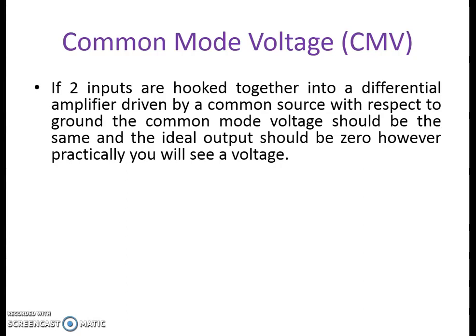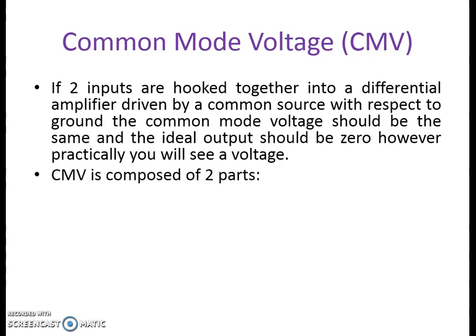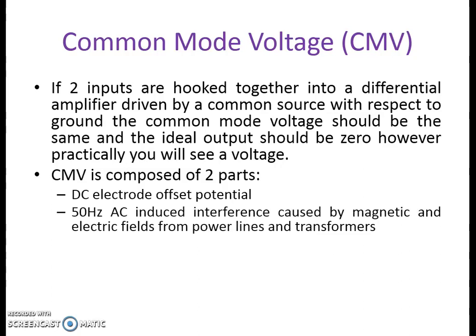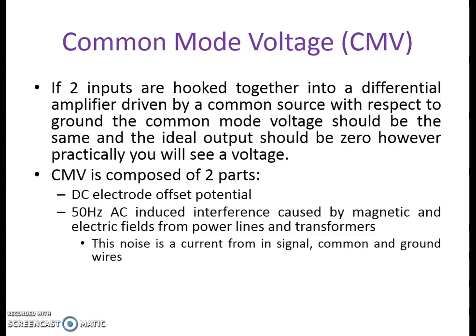If two inputs are hooked together into the differential amplifier driven by a common source, the common mode voltage should be the same and the ideal output should be zero. However, practically there is something called offset. That common mode voltage is composed of two parts: in the case of ECG, it contains a DC electrode offset potential and a 50 Hz AC-induced power line interference caused by the magnetic and electric fields from the power lines. This noise is a current formed in the signal, common, and ground wires, and is generally capacitively coupled into the circuit.